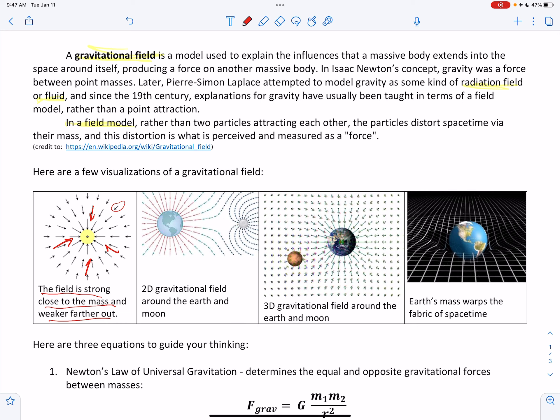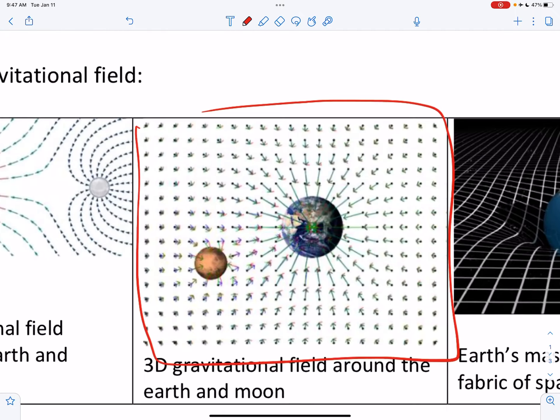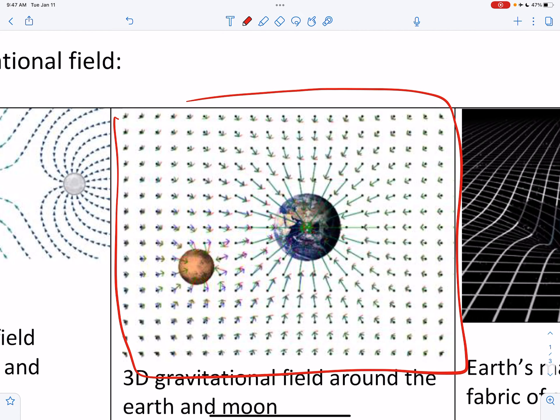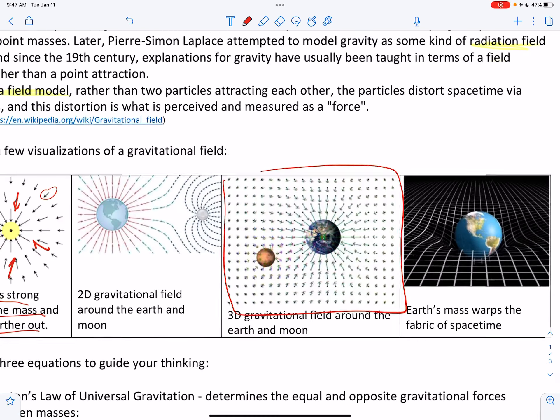That's a two-dimensional representation of that. This would be a three-dimensional representation, where you can see that the gravitational field actually moves into and out of the screen in this particular model. So it's 3D, surrounding the space around each of the objects.